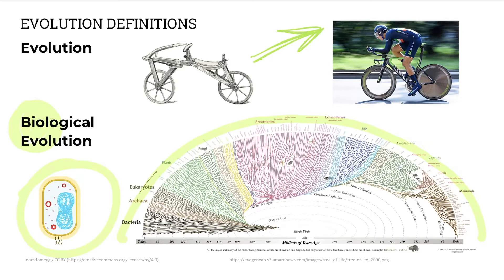Protozoa, peanuts, pawpaws, pansies and polar bears — the whole lot. This theory proposes an explanation of how one species may give rise to many new species over long periods of time. It does not propose an explanation for the origin of life, but the origin of species. There are two types of biological evolution: macro and microevolution.